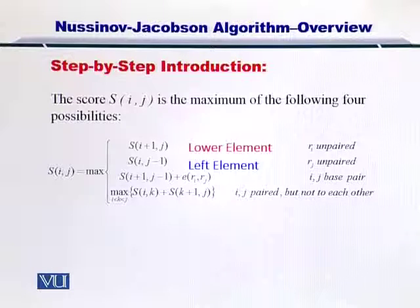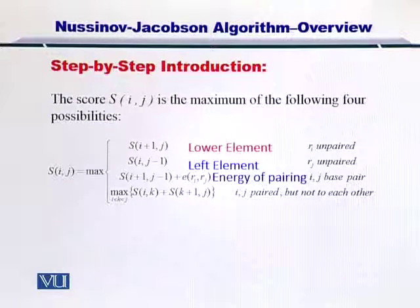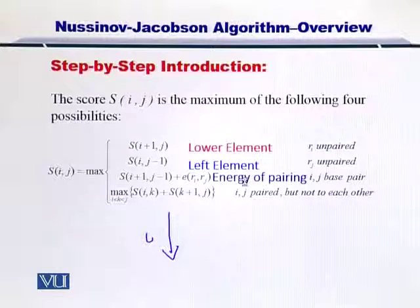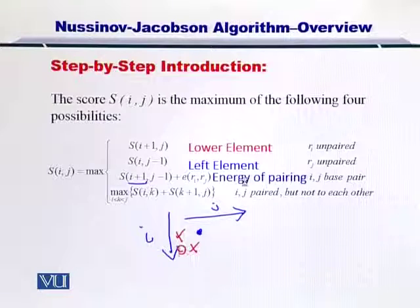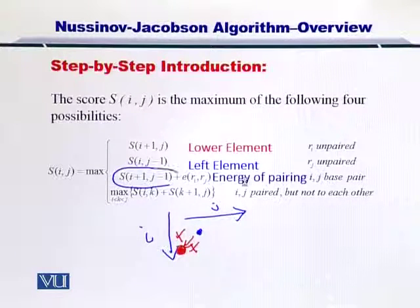The third score is essentially the diagonal below your current position. If this is your i and this is your j, then i plus one would be here and j minus one would be here. So you are essentially looking for this value diagonally positioned below your current position.